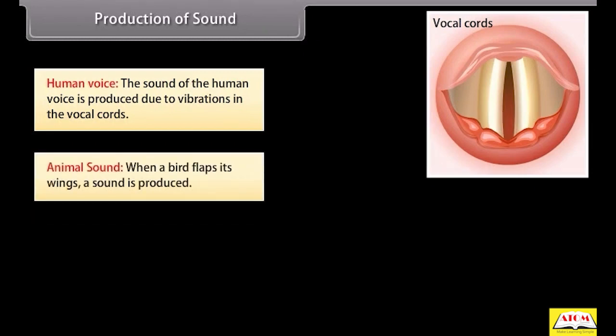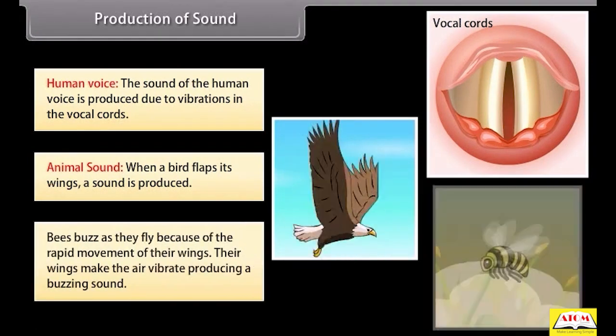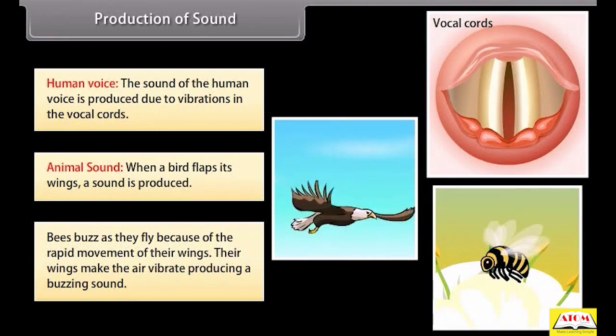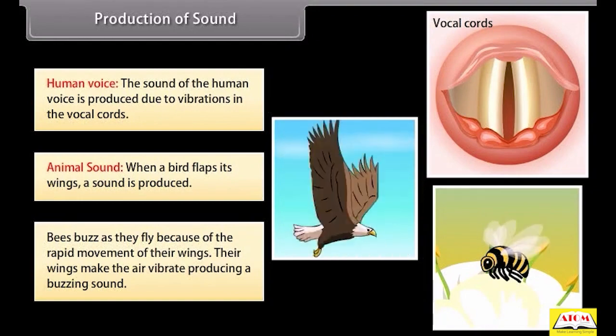Animal sound. When a bird flaps its wings, a sound is produced. Bees buzz as they fly because of the rapid movement of their wings. Their wings make the air vibrate, producing a buzzing sound.